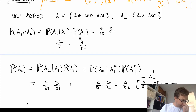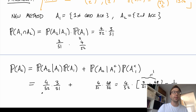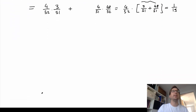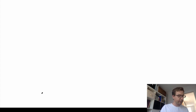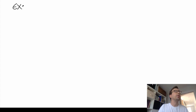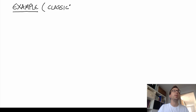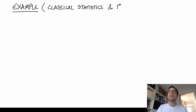One final point to discuss is how conditional probabilities can come up in statistical analysis. At a philosophical level, there are lots of discussions one can have about statistics — there's a whole course on it next semester. I want to discuss the differences between two main branches: classical statistics, sometimes called frequentist statistics, and Bayesian statistics.